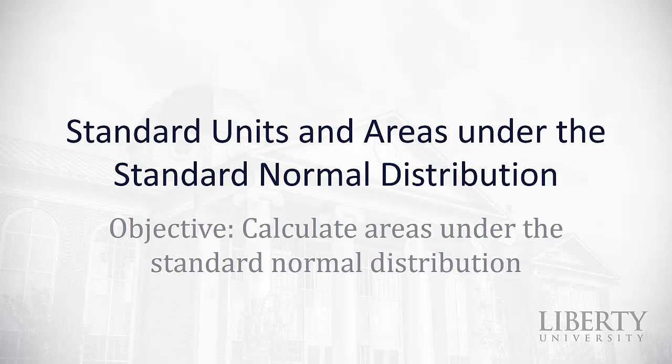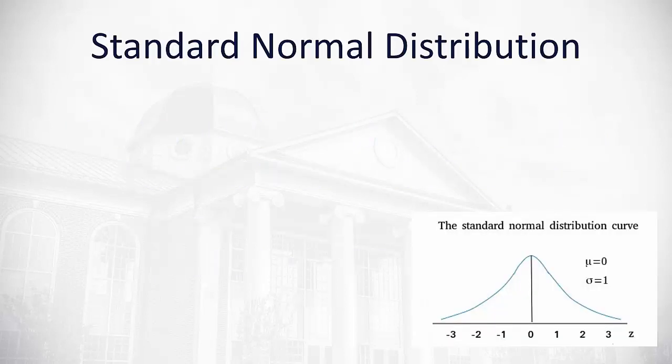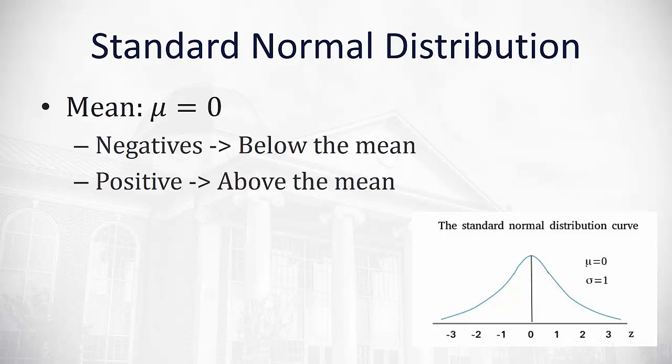Our objective is to calculate the area underneath the standard normal distribution. What is the standard normal distribution? There's a picture of it here on the bottom right. Two qualities of the standard normal distribution: First, the mean is always zero, putting the center right at zero so that negatives are below the mean and positive values mean we're above the mean. Also, the standard normal has a standard deviation of one unit.